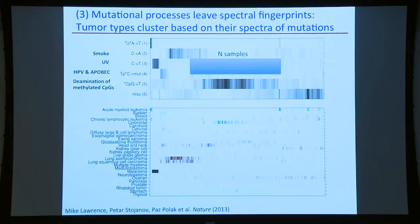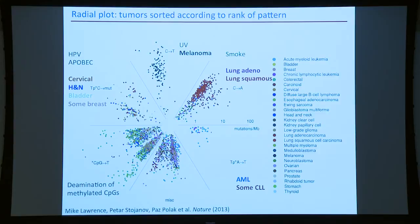We can visualize this where every patient's radius represents mutation frequency and angle represents the most active process. Melanoma clusters with UV C-to-T mutations; lung cancer clusters with smoking; HPV/APOBEC clusters are visible. A beautiful paper from the Sanger group looked at 7,000 tumors and identified 21 processes, and the number continues to grow as we find additional processes.